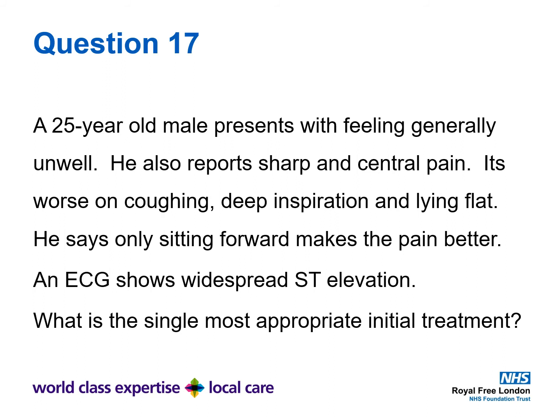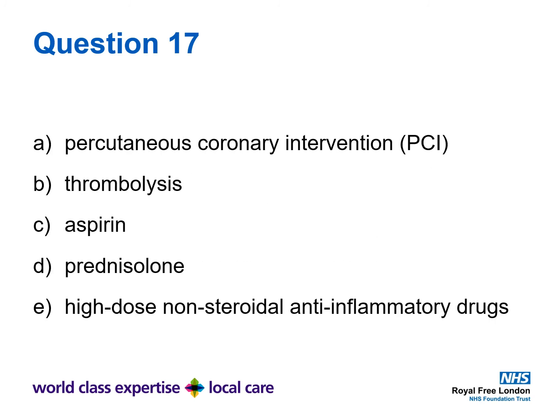Question 17. A 25 year old male presents with feeling generally unwell. He also reports sharp and central chest pain, worse on coughing, deep inspiration and lying flat. Only sitting forward makes the pain better. An ECG shows widespread ST elevation. What is the single most appropriate initial treatment for his chest pain? A: Percutaneous coronary intervention, B: thrombolysis, C: aspirin, D: prednisolone, or E: high dose non-steroidal anti-inflammatory drugs?